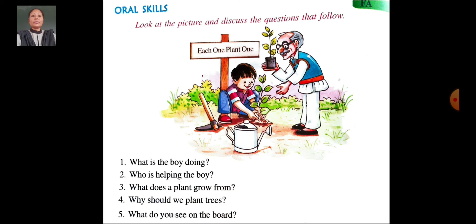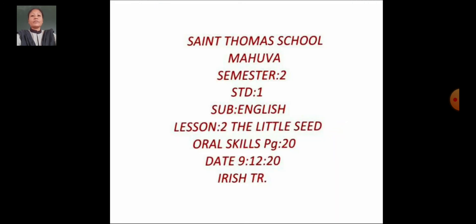Fifth question: What do you see on the boat? Look at the picture. We can see 'Each One Plant One' is written on the boat. Dear students, I will send you the answers through PDF. That's all for today. Thank you, have a nice day.